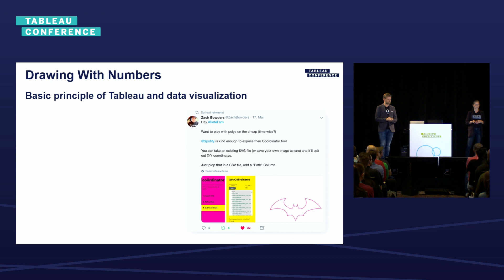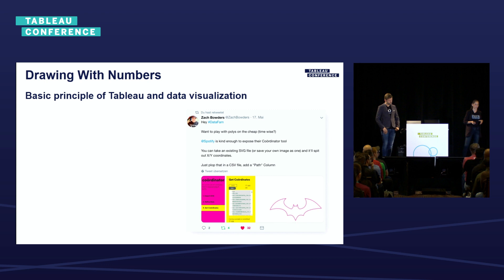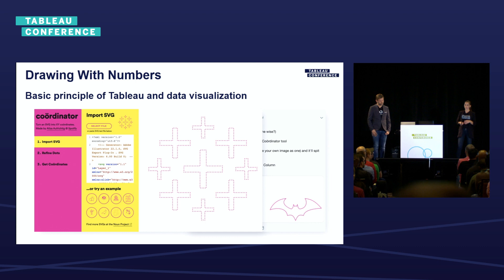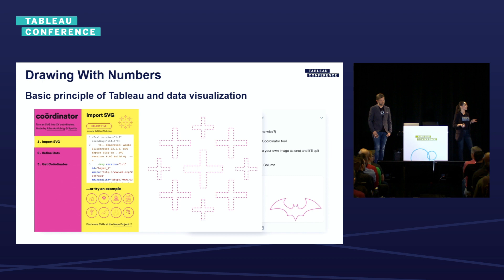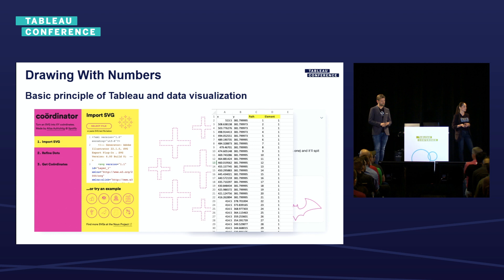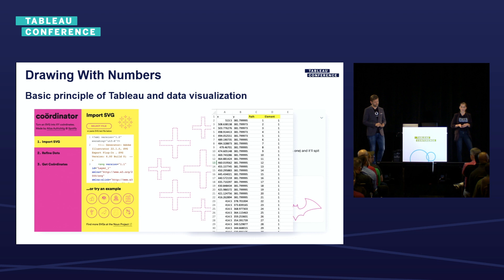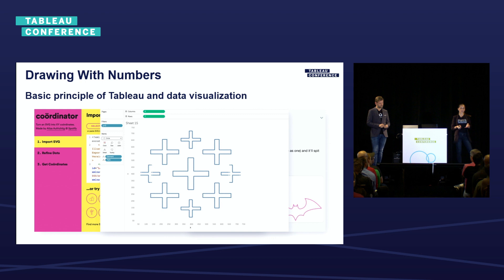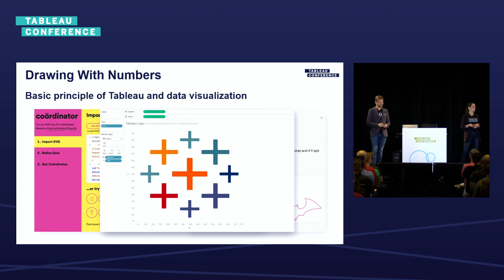Zach is a fellow community member from the US who has drawn beautiful superhero-related stuff — after the session, check his Tableau Public gallery. What does the tool do? You can upload an image, it processes that image and gives you back the X and Y coordinates in a simple CSV file. For this Tableau logo, I manually had to add a path and a points order to tell Tableau how to connect the data points, and a new field which defines the different elements of this logo. Then just bring this data set to Tableau and easily create lines using the line mark type. Or to create a filled object, just use the polygon mark type.